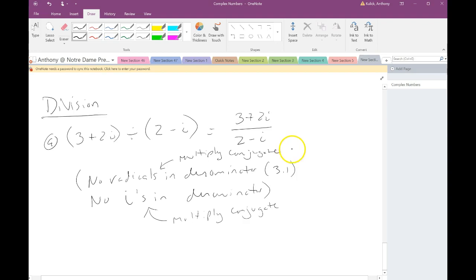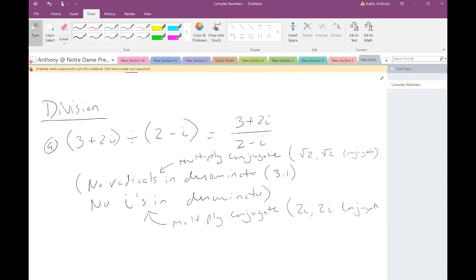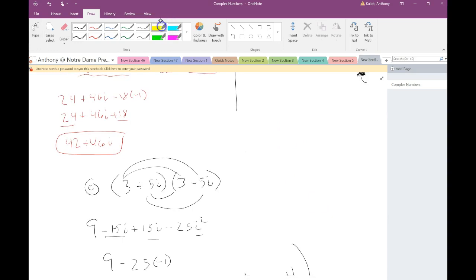So if I want to divide these two complex numbers, I want to put it this way. And remember when we said there were no radicals in the denominator. From lesson 3.1, we're also going to say there are no i's in the denominator. And do you remember how we got rid of the radicals in the denominator? We multiply by the conjugate. So guess how we're going to get rid of the i's in the denominator? We're going to do the same thing. We're going to multiply by the conjugate.